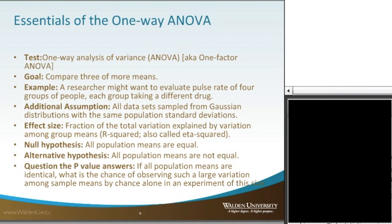The goal is to compare three or more means. For example, a researcher might want to evaluate pulse rate of four groups of people each taking a different drug. One assumption is that all data sets are sampled from a Gaussian distribution with the same population standard deviations — that goes back to homogeneity of variances. The effect size is the fraction of total variation explained by variation amongst the group means, which is R-squared, also known as eta-squared. The null hypothesis is that all population means are equal for the groups, and the alternative hypothesis is that all population means are not equal.